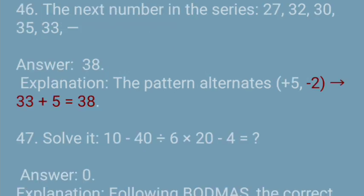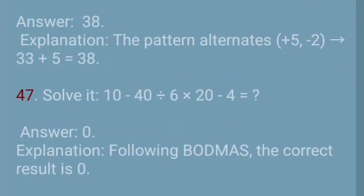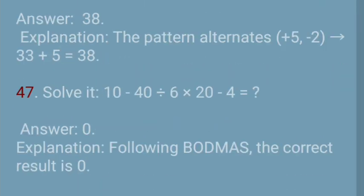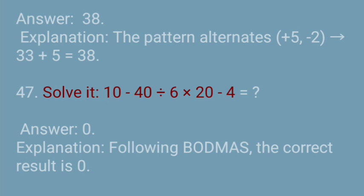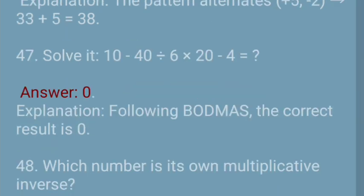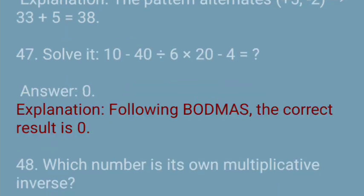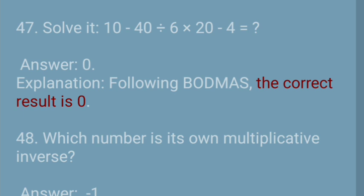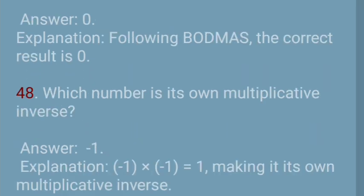Question 47: Solve it: 10 to 40 divided by 6 times 20 to 4 = Answer: 0. Explanation: Following BODMAS, the correct result is 0.